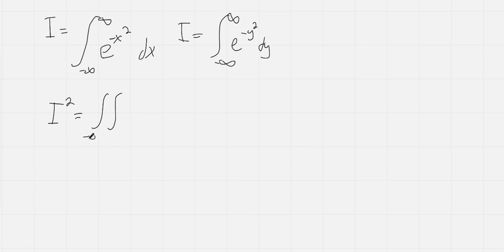So for both these integrals, from negative infinity to positive infinity, we have e to the negative x squared times e to the negative y squared dx dy. But since these are both exponentials, we can just add the exponents. So we end up getting e to the negative x squared plus y squared dx dy.